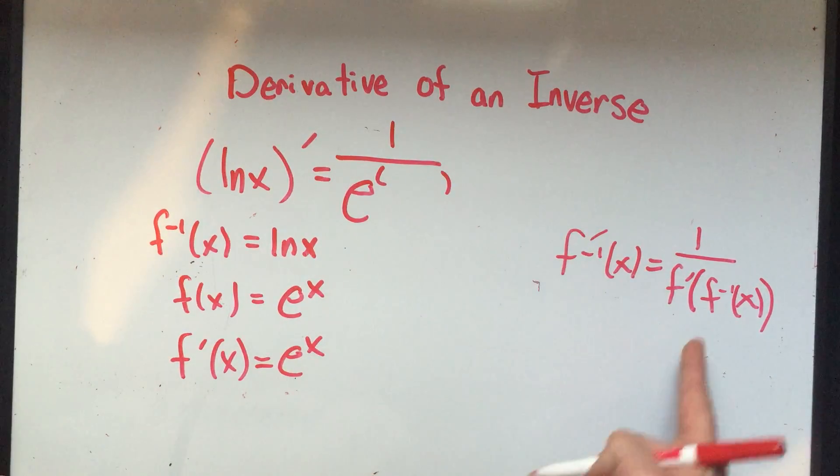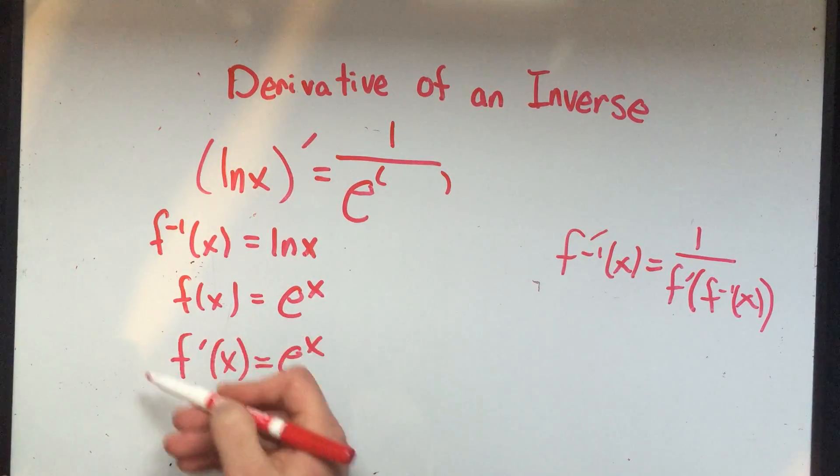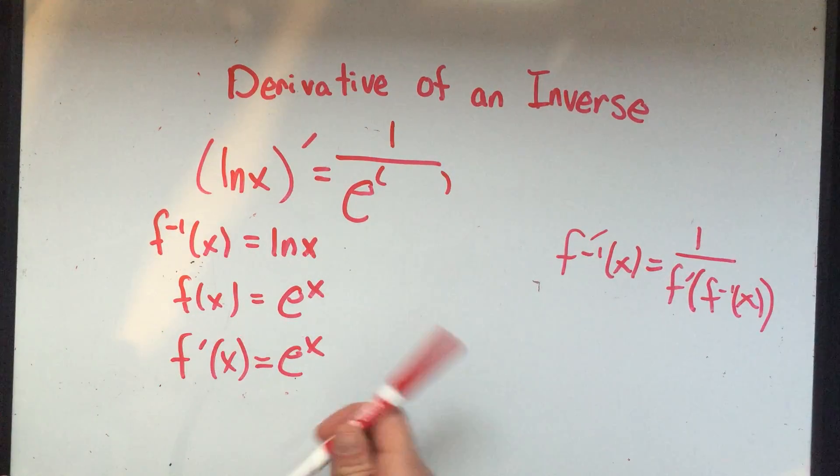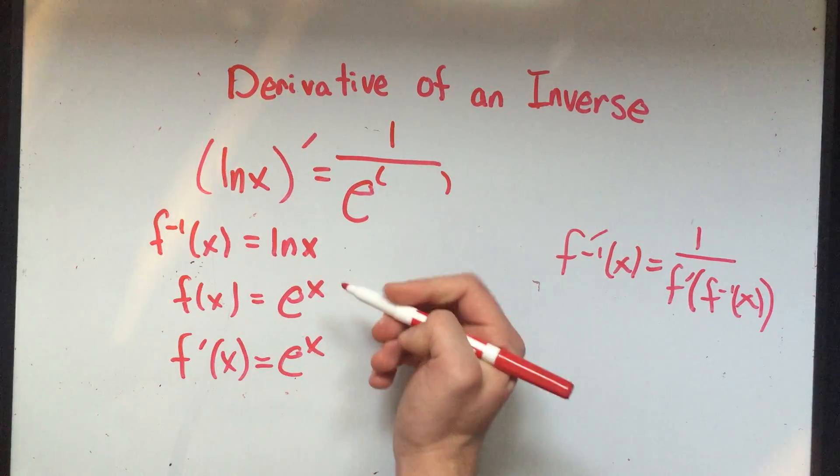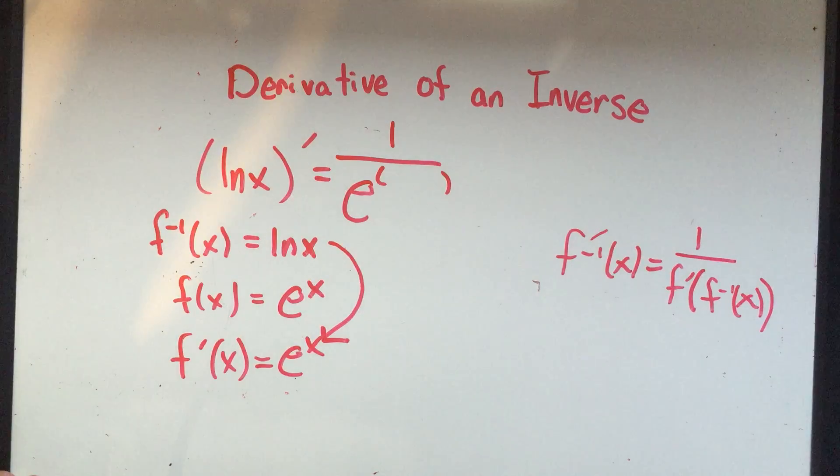I have to put f prime in here - I've got to put e to the x. But it's not e to the x, it'll be e to the f inverse of x. I'm evaluating my derivative at the inverse function. Or in other words, I'm taking my inverse function and plugging it in right here.